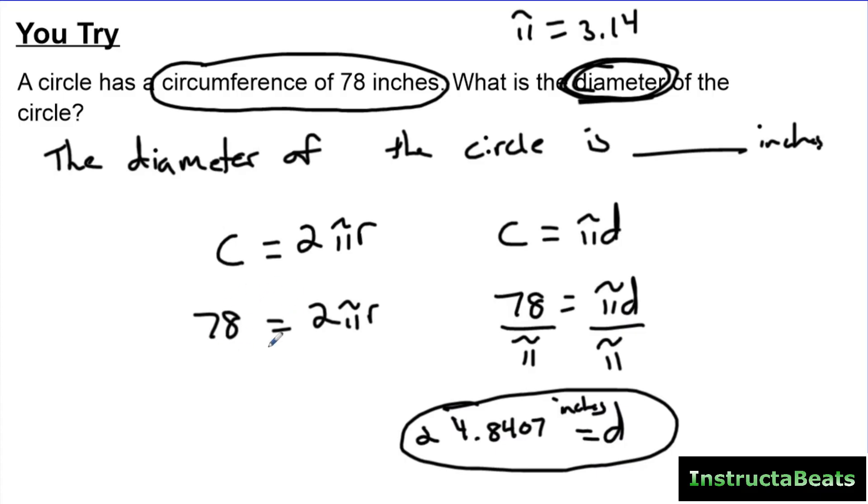Same thing here. You could solve for r, and then just multiply it times two to find your diameter. But again, that's what we're talking about. You can substitute, make it easier on yourself, do less work if you know what the circumference of a circle formula is and where it came from, so you can manipulate it and change it.